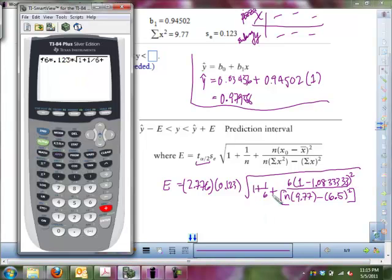Alright, so we're at this point. We have a plus, and then let's start with a 6, and then times. You can press the times, or you can just put parentheses. And then here, we have the x-naught, which is 1, minus, and then the x-bar, which is 1.08. And then 3, 3, 3, 3, 3, 3. We'll close that parentheses, and we'll square it.